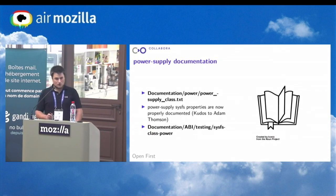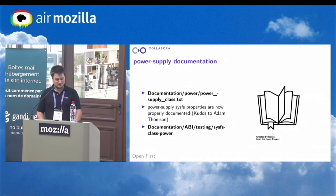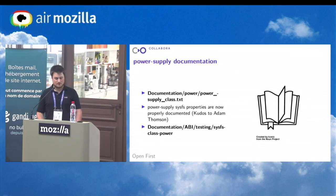All information about which properties are available can be found in the documentation file. Until recently there was just a generic text file giving random information. Recently, Adam Thompson, who worked on a patch set for USB — which I will come to in the next slide — added nice ReST-style documentation like every other SysFS file. Just look into that if you have questions about any properties.